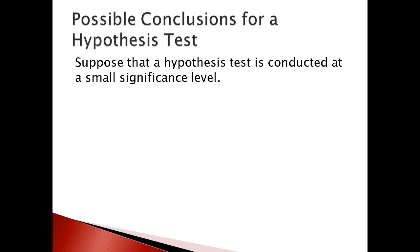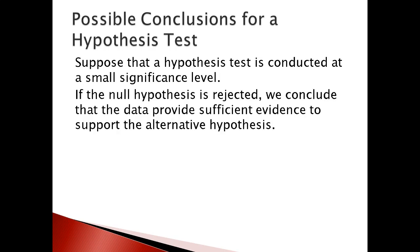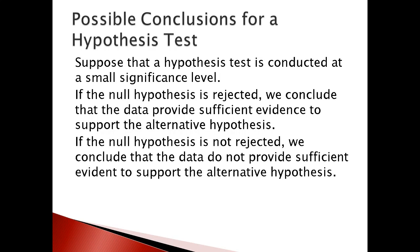Regarding possible conclusions for hypothesis testing: suppose the hypothesis test is conducted at a small significance level. If the null hypothesis is rejected, we conclude that the data provides sufficient evidence to support the alternative hypothesis. Since null and alternative are complementary to each other, if we reject the null hypothesis, we have sufficient evidence to say that the alternative hypothesis is true.